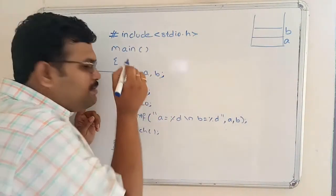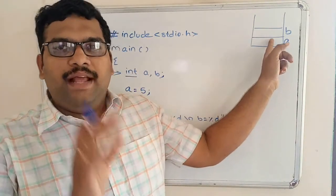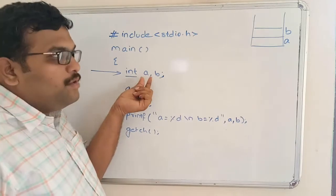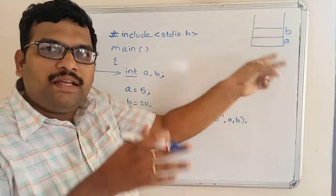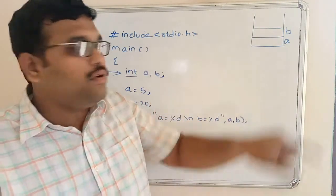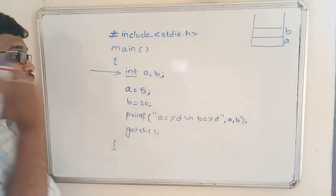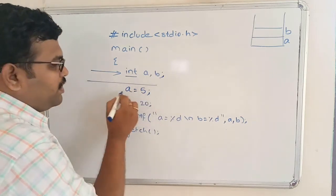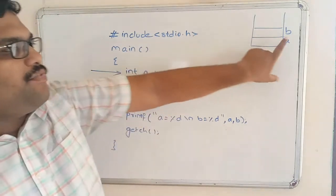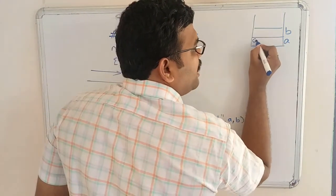As we mentioned, the data type is integer, so the memory locations will only accept integer values. After executing 'int a, b', two memory locations will be allocated for integer values. Before executing the assignment statements — after allocating 'a' and 'b' — there will be initial values that are called garbage values.